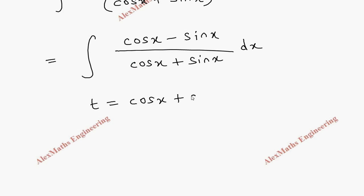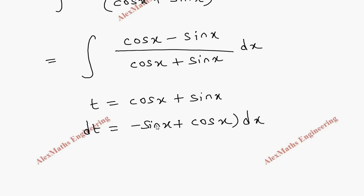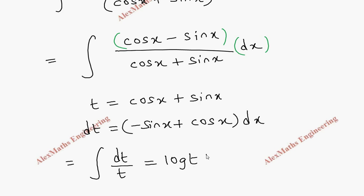We are left with the integral of (cos x − sin x) / (cos x + sin x) dx. Let us take the denominator cos x + sin x as t, so dt = (−sin x + cos x) dx, which is exactly cos x − sin x dx, the entire numerator. So this becomes ∫ dt/t = log|t| + c, and replacing t we get log|cos x + sin x| + c.